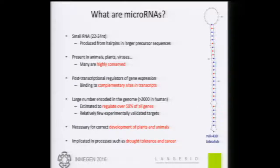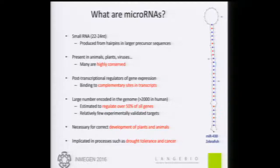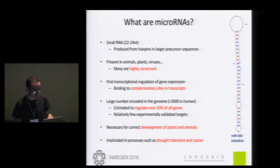Just a brief introduction to microRNAs. They're very small RNAs, about 22 nucleotides long, produced from hairpins from larger precursors. They're present in animals, plants, and many viruses that infect these organisms, and a lot of them are highly conserved. They are post-transcriptional repressors of gene expression by binding to complementary sites in transcripts. Currently there are above 2,000 annotated in the human genome, estimated to regulate over 50% of all protein-coding genes, yet still relatively few have experimentally validated targets. They are necessary for correct development of plants and animals, and have been implicated in drought tolerance in plants and cancer in humans.